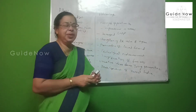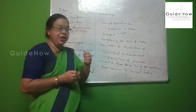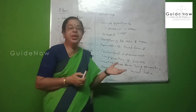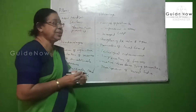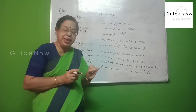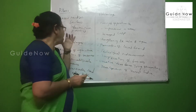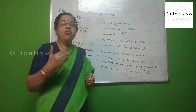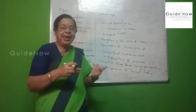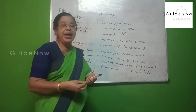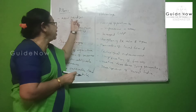Now we have completed the important objectives of Make in India Initiative. Next, we explain the four important pillars. The first pillar is introduction of a new mindset — accepting new technology, new ideas, and new information from the young generation.